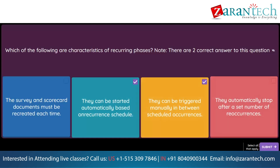Question. Which of the following is a characteristic of master documents? Option 1: Master document surveys can be published as the first recurrence. Option 2: Changes made to master documents affect all future documents in the project. Option 3: The master document folder title contains the date the project was initiated. Option 4: They can only be edited before the final recurrence begins.